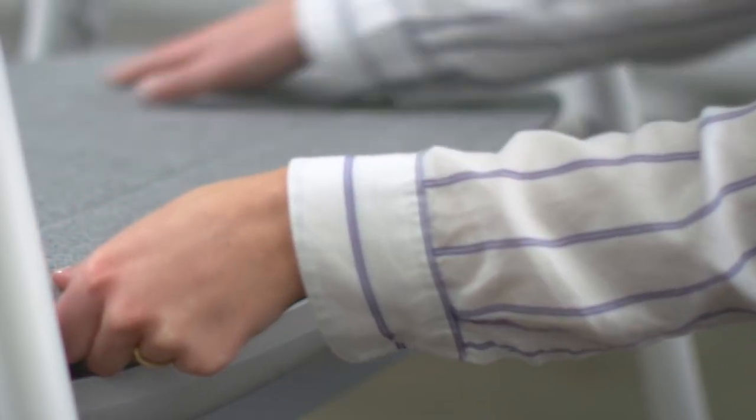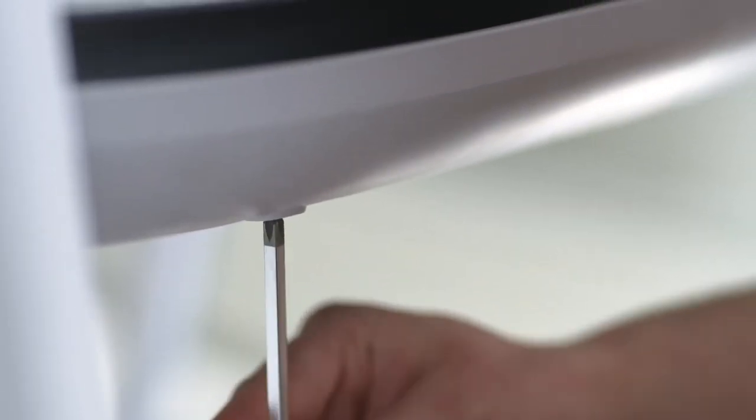Using the remaining two screws in the orange bag, secure the Surface Hub to the Rome mobile stand. If you don't have the optional battery, finish by securing the lid using the screws in the clear bag.